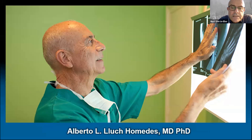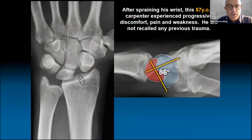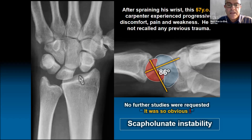Let's start with a clinical case that demonstrates the need for using right terminology in clinical practice. After a mild wrist sprain, this 57-year-old carpenter experienced pain, swelling, and functional loss. The x-rays obtained at that time disclosed that both the scapholunate angle and the scapholunate gap were not normal. No further studies were requested because, according to his clinical records, it was an obvious case of scapholunate instability. So the patient was scheduled for surgery the same week.